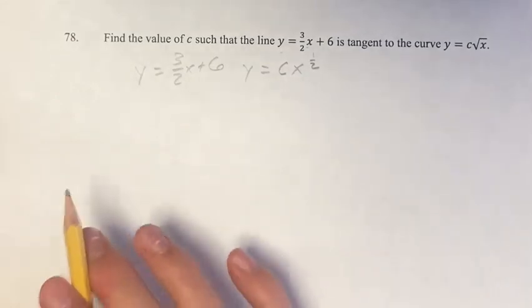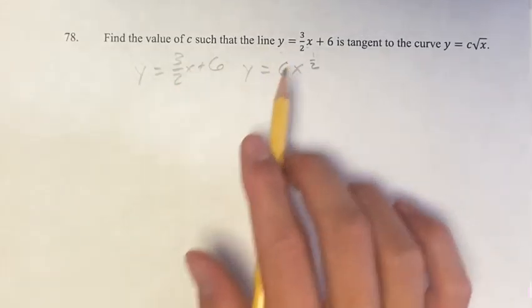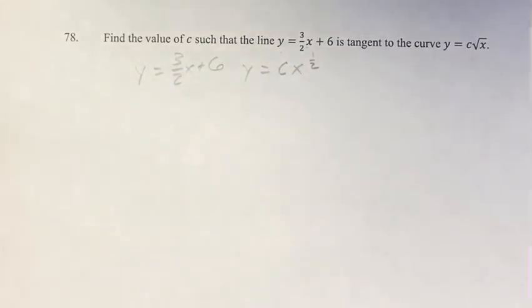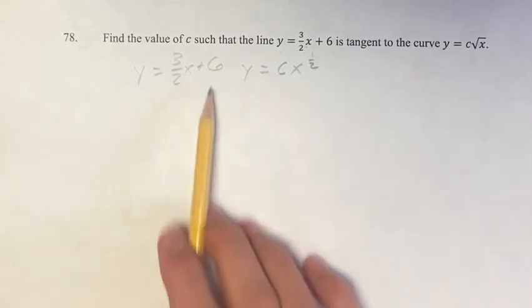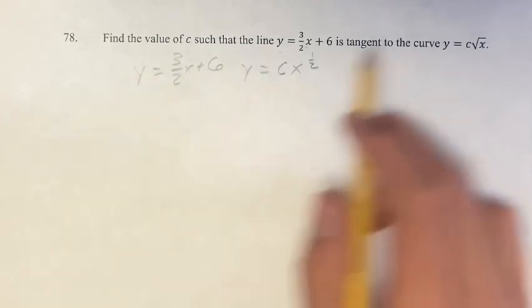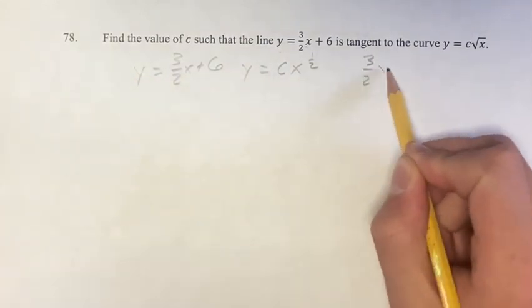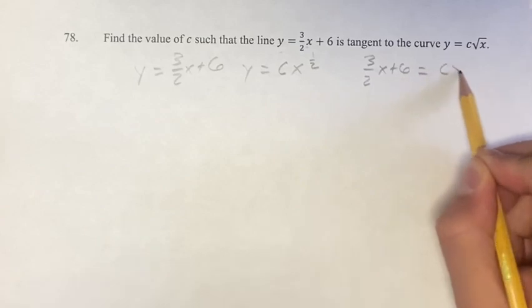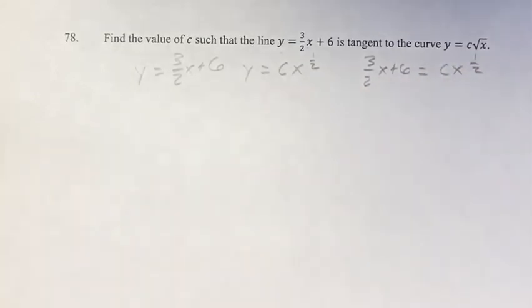We know that if this line is tangent to the curve, at whatever point we're dealing with, they're going to have the same x and y values. Therefore, 3 halves x plus 6 equals cx to the 1 half. Since these are both equal to y, they're equal to each other.